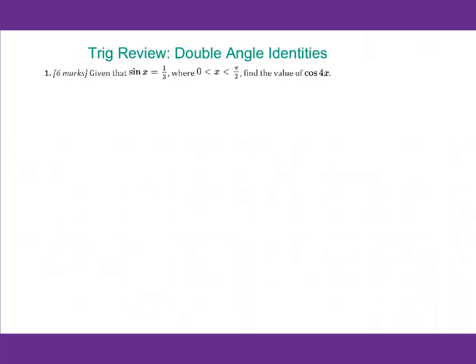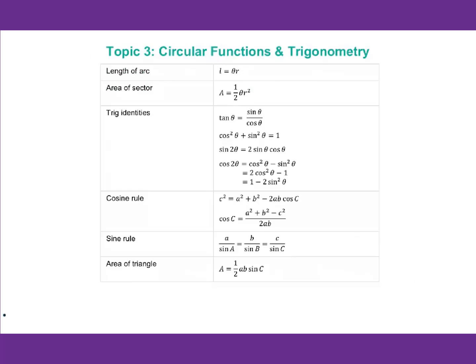Today's lesson is about double angle identities. Before we go to specific questions, let's go over trig formulas in the IB exam. For length of arc and area of sector, remember that theta is in radians.